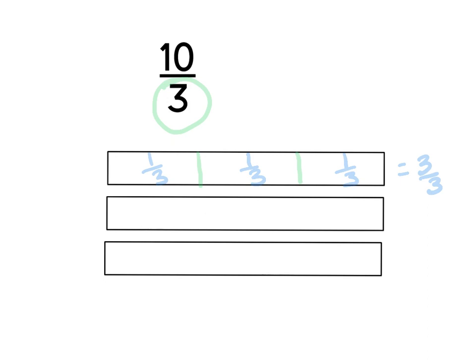I've taken out one group of three-thirds and I'm going to subtract that from ten-thirds. Ten-thirds minus three-thirds equals seven-thirds. I look at my fraction now and ask myself: is it still an improper fraction? The answer is yes, because the numerator is larger than the denominator, which tells me I still have some whole numbers to remove. So I'm going to partition my second tape diagram.